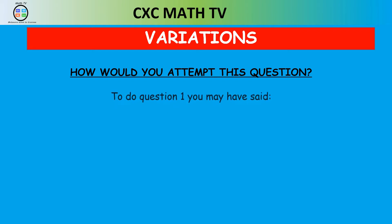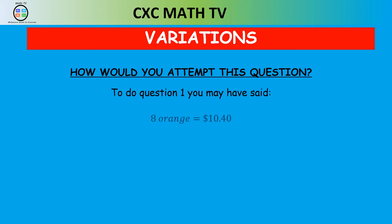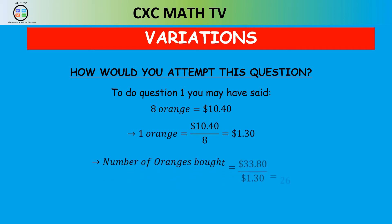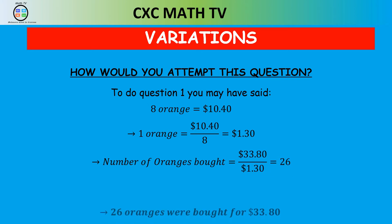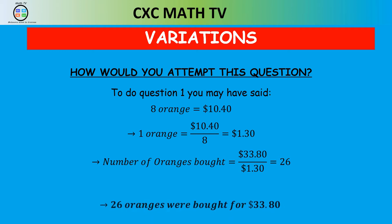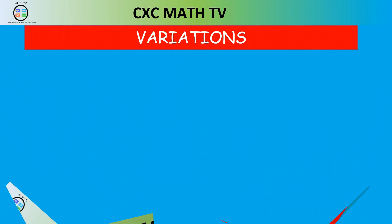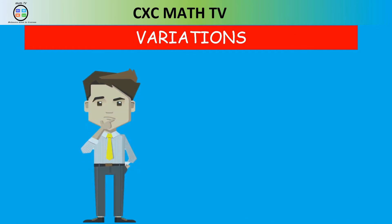So one orange would just be $10.40 divided by eight, which is $1.30. And so the number of oranges bought is just the total price — $33.80 — divided by the price of one orange, and so you get 26.